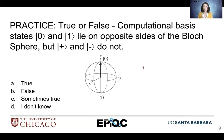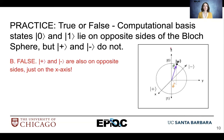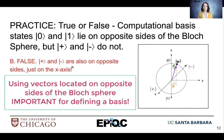True or false: the computational basis states ket0 and ket1 lie on opposite sides of the Bloch sphere, but ket plus and ket minus do not. The correct answer is false. Ket plus and ket minus are also always on opposite sides of the Bloch sphere, just this time on the x-axis. It's important to note that using vectors located on opposite sides of the Bloch sphere is crucial when defining a new basis for a quantum system, because we have to respect the orthogonal relationship between those vectors in our basis.